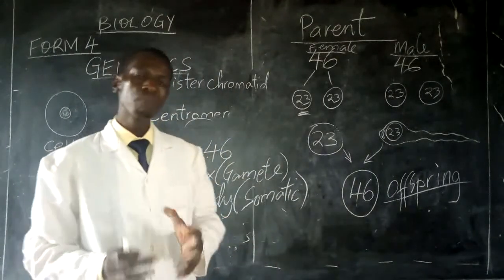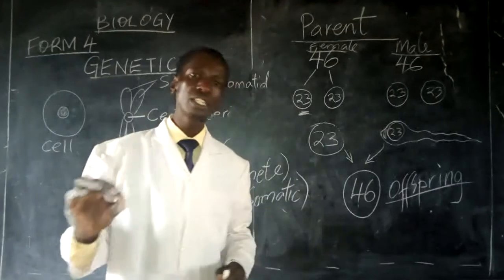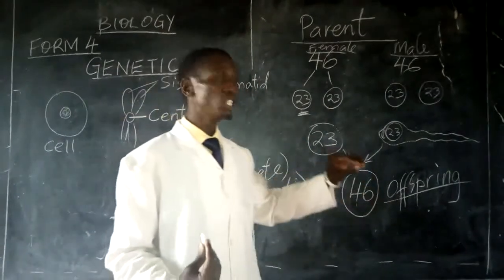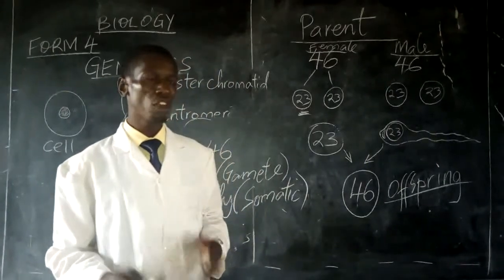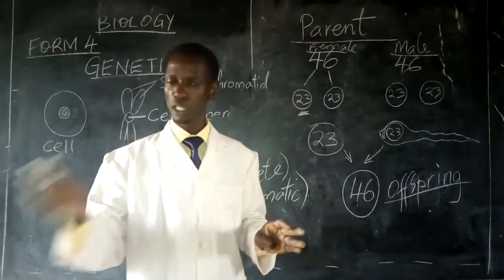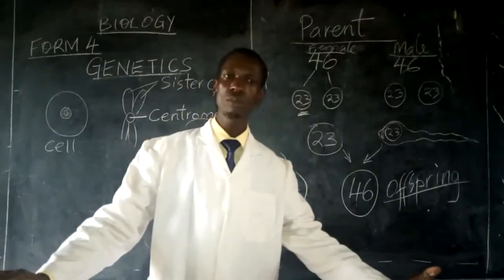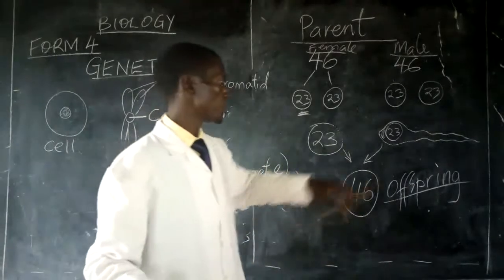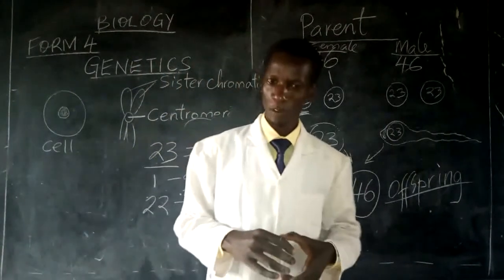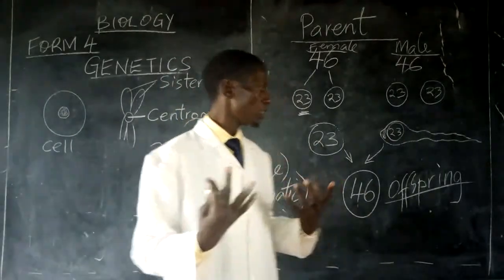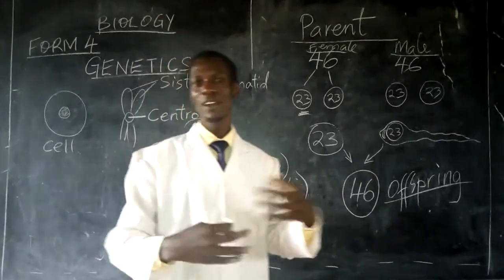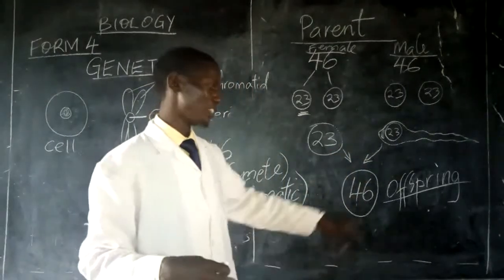During meiosis, there is formation of gametes which comprise half the number of chromosomes as the parent cell. If it is a male, it will produce sperm cells, and each nucleus of a sperm cell comprises 23 chromosomes. If it is a female, it will form the ovum, and within each ovum there are 23 chromosomes. These 23 chromosomes from the sperm and 23 from the ovum fuse during reproduction, leading to formation of a single unique cell called the zygote, which will develop to form an embryo and eventually a complete organism.